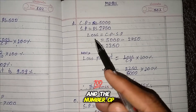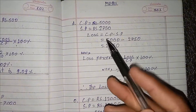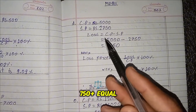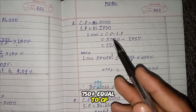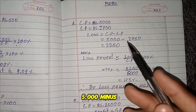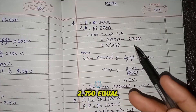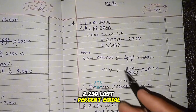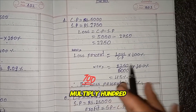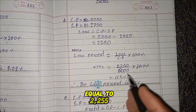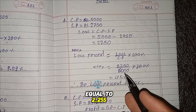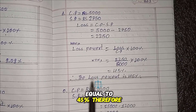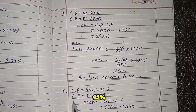Part D: CP equals RS 5,000, SP equals RS 2,750. Loss equals CP minus SP equals 5,000 minus 2,750 equals 2,250. Loss percent equals loss divided by CP multiplied by 100 percent equals 2,250 by 5,000 multiplied by 100 percent equals 45 percent. Therefore, the loss percent is 45 percent.